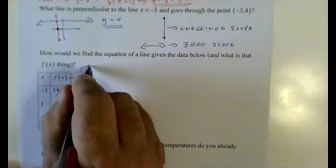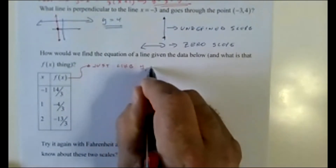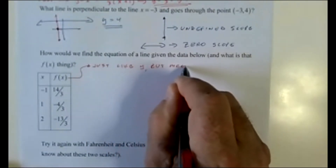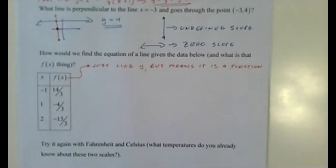What's this f(x) thing? It's just like y, but it means it's a function, which has certain rules. The biggest rule is that it passes the vertical line test. That means we have something we can do calculus to — we can't do calculus unless we have a function, although we find ways to cheat with polar coordinates and parametric equations.